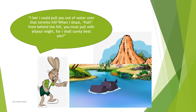'I bet I could pull you out of the water and over the termite hill. When I shout pull, from behind the hill you must pull with all your might, for I shall surely beat you.' This picture shows Umundla teasing Hippo who is in the water, and you can see the small ant hill. Umundla plans to tie one end of the rope to Hippo on one side of the river, and the other end to Rhino on the other side, making them ready for the tug of war.